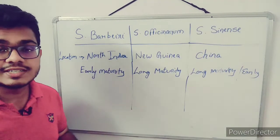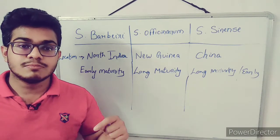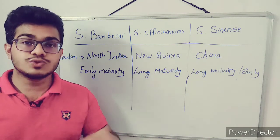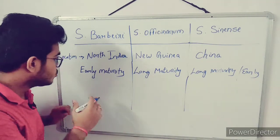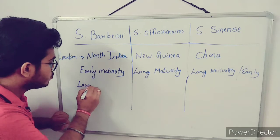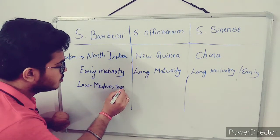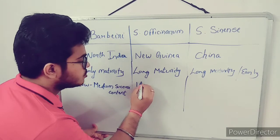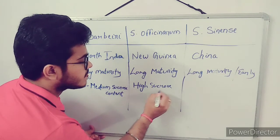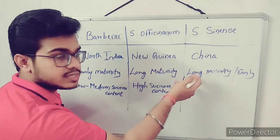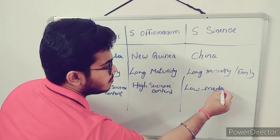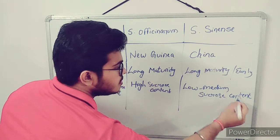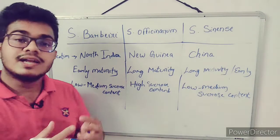The sucrose content in the sugarcane is the most important factor for sugar industries that depend on sugarcane. Saccharum barbari has low to medium sucrose content. Saccharum officinarum, being a long duration growing variety, has high sucrose content. Saccharum sinensis also has low to medium sucrose content.